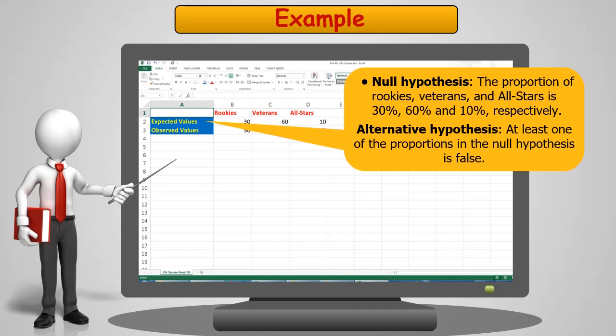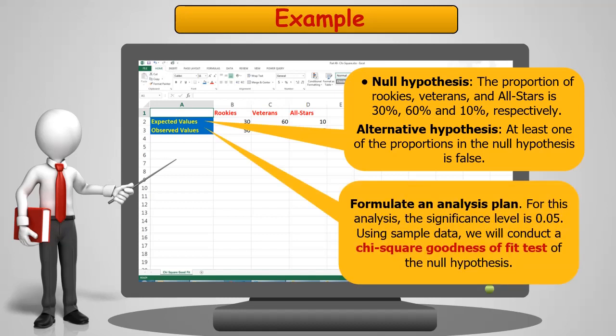The null hypothesis is that the rookies, veterans, and all-stars match the percentages 30, 60, and 10, respectively. The alternate hypothesis is that at least one of the proportions in the null hypothesis is false. The analysis plan is going to be a significance level of 0.05, and we're going to execute a chi-square goodness of fit test of the null hypothesis.